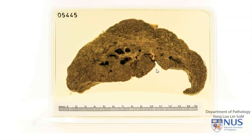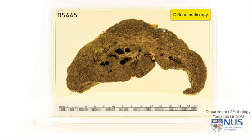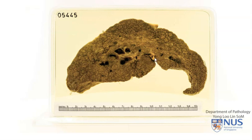Here is a slice of the liver, and this liver is grossly very abnormal. We can see that it is involved by a diffuse process that essentially affects the entire cut section. There are multiple nodules here that are replacing the entire liver. The other very obvious abnormality is the colour of the liver. In the fresh specimen, this would appear somewhat greenish, but it's difficult to appreciate in this preserved specimen.